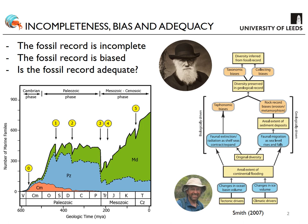Recognising biases in the fossil record is not a new line of interest. Going back to Darwin's Origins of Species, there is a whole chapter on the vagaries of the fossil record — basically Darwin's excuses as to why the fossil record doesn't show the gradualistic view of evolution he was promoting, mainly because it's incomplete, patchy, and gappy.